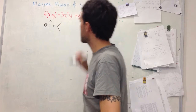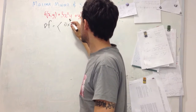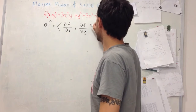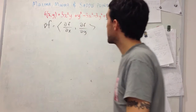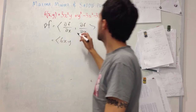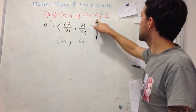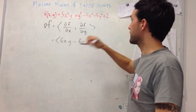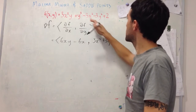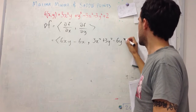Taking nabla f — in this two-variate case, this is just going to be (∂f/∂x, ∂f/∂y). Differentiating with respect to x, keeping y as a constant, gives us 6xy. Then this term becomes zero, this is negative 6x, and then zero and zero. For the y partial derivative we're going to have 3x² plus 3y², zero, minus 6y.